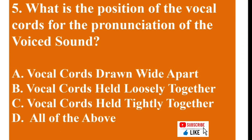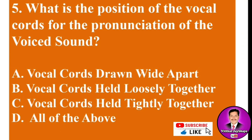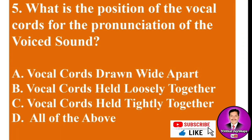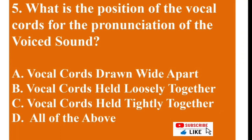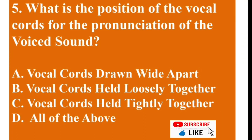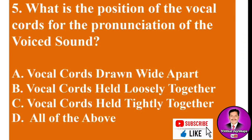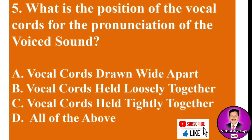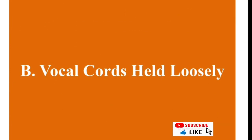MCQ number five: What is the position of the vocal cords for the pronunciation of voiceless sounds? Options: A) vocal cords drawn wide apart, B) vocal cords held loosely together, C) vocal cords held tightly together, D) all of the above. The answer is B — vocal cords held loosely together.